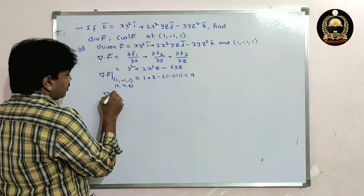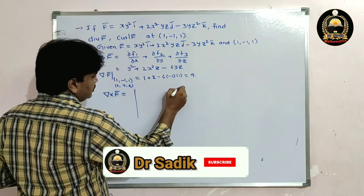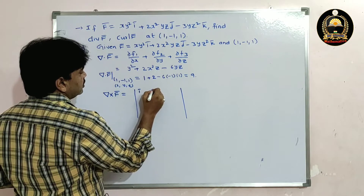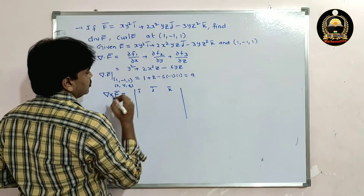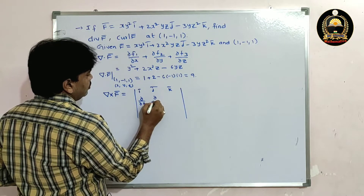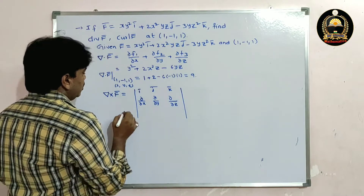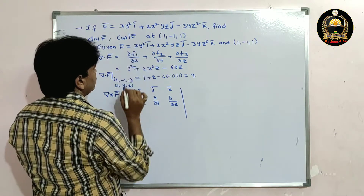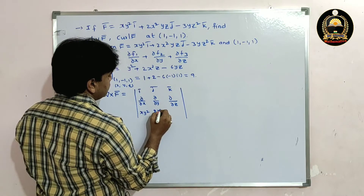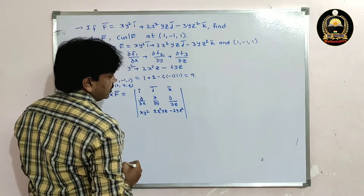Now curl f̄. Del cross f̄ is equal to a determinant with first row: ī, j̄, k̄; second row: ∂/∂x, ∂/∂y, ∂/∂z; and third row with f̄ components: xy² (ī coefficient), 2x²yz (j̄ coefficient), and -3yz² (k̄ coefficient).